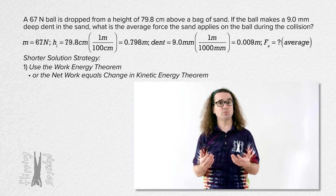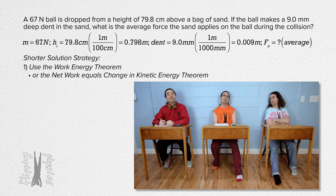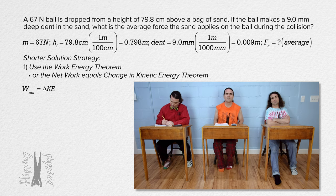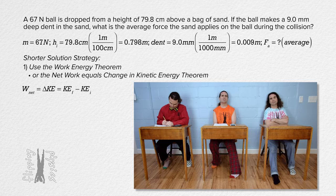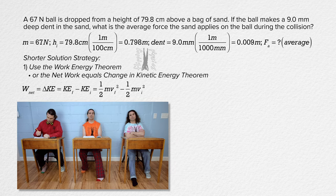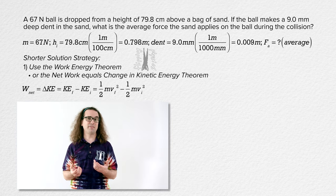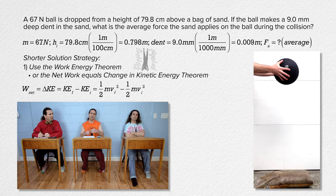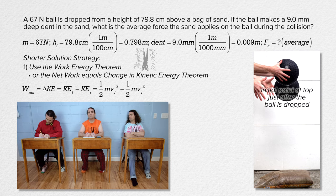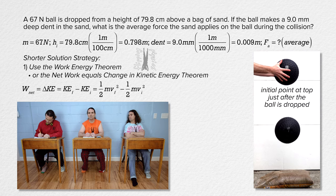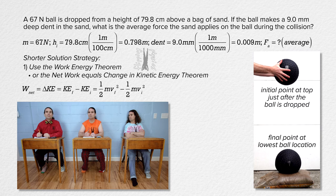Bobby, please use the net work equals change in kinetic energy theorem to solve this problem. Net work equals change in kinetic energy, which equals kinetic energy final minus kinetic energy initial, which equals one-half mass times velocity final squared minus one-half mass times velocity initial squared. You have to define the locations of your initial and final points first. The initial point is at the top where you drop it and the final point is at the bottom where the ball is momentarily at rest as its velocity direction changes from down to up.